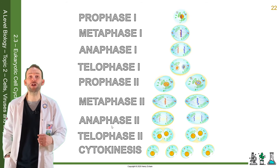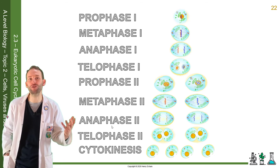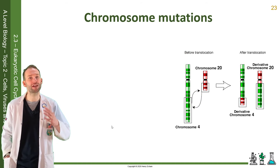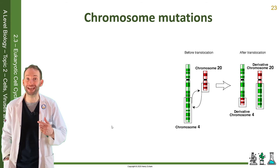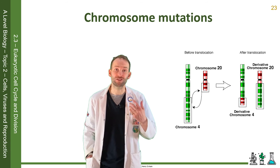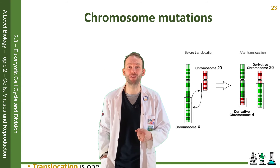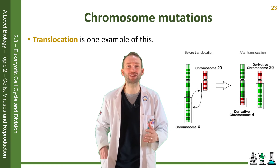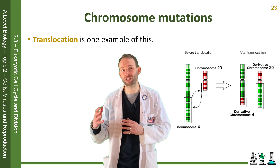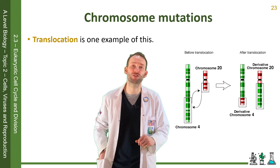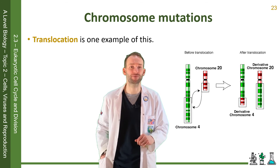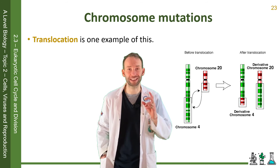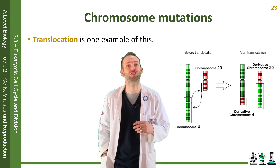Now, chromosome mutations. Sometimes during the process of meiosis, the manipulation of chromosomes can cause major mutations. Translocation is one example — this is when a whole section of a chromosome breaks off and joins to another completely different chromosome. These are much more serious than just individual gene point mutations.